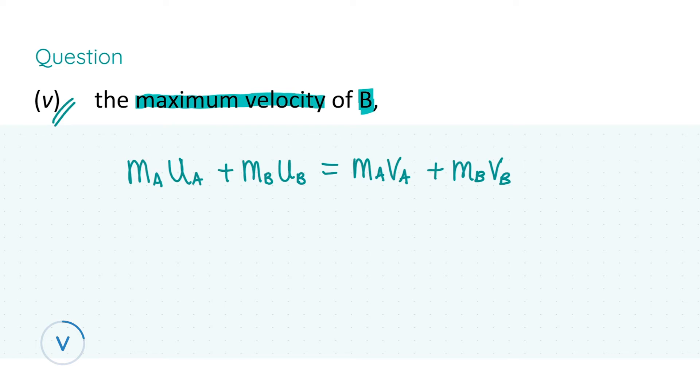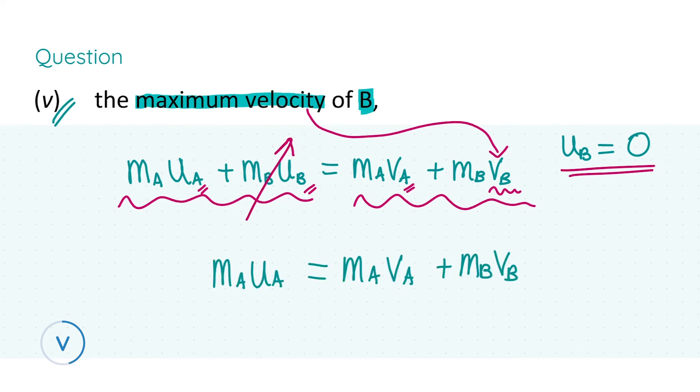Stating that the momentum before the interaction between the two bodies is equal to the momentum afterwards, we use m_A u_A + m_B u_B = m_A v_A + m_B v_B because we know all the masses of A and B, the initial velocities of A and B, and the final velocity of A. We need to find v_B, the maximum velocity. But we can simplify this formula because B was at rest, so the initial velocity of B is zero. We can neglect this term completely. All we need to do now is substitute in.